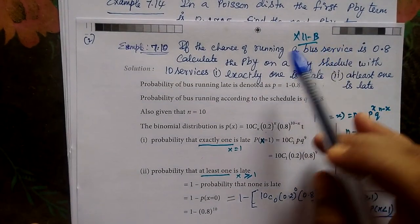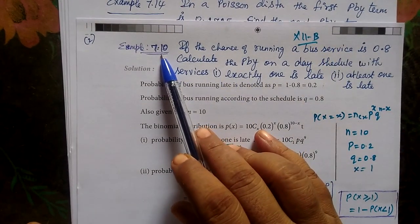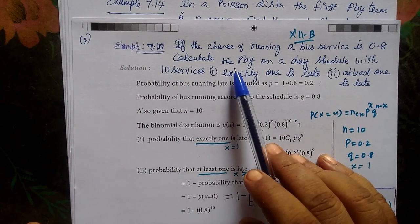Here is the business math. Example 7.10. You see the first question.